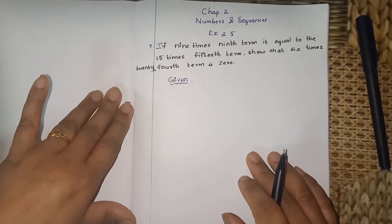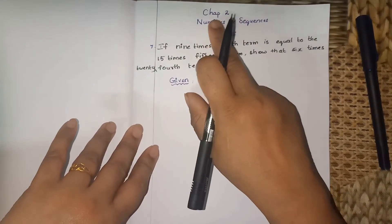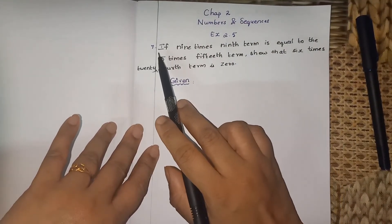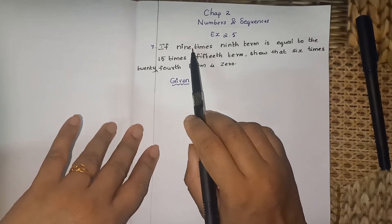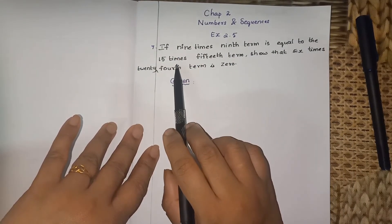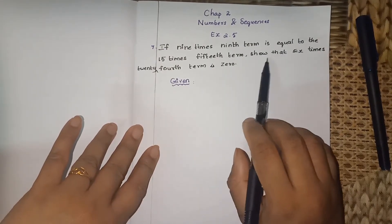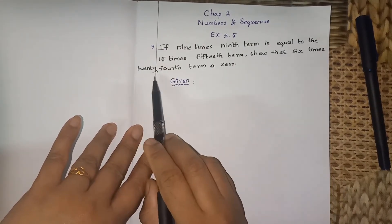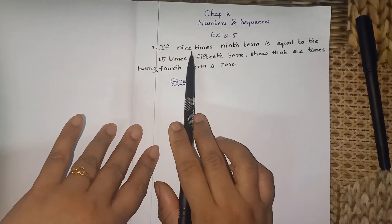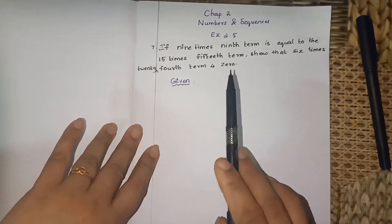Welcome to the channel. Today we are going to see Chapter 2, Numbers and Sequences, Exercise 2.5, Question 7. The question is: if 9 times the 9th term is equal to 15 times the 15th term, show that 6 times the 24th term is 0. Please listen here patiently and write the data.